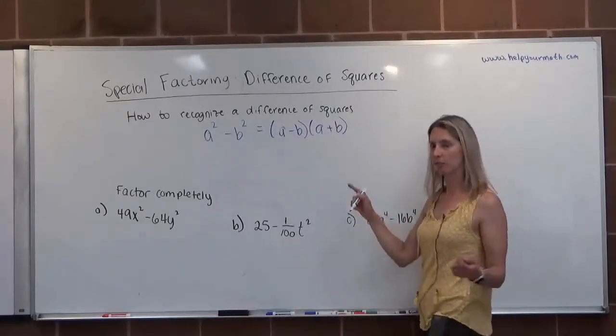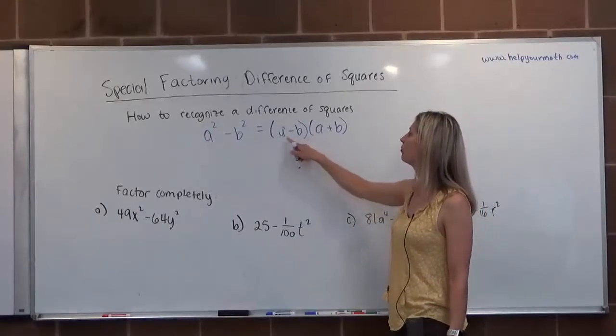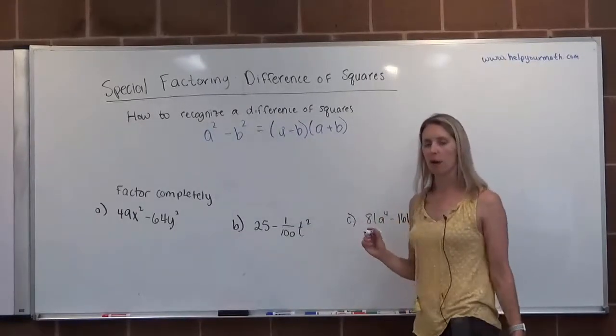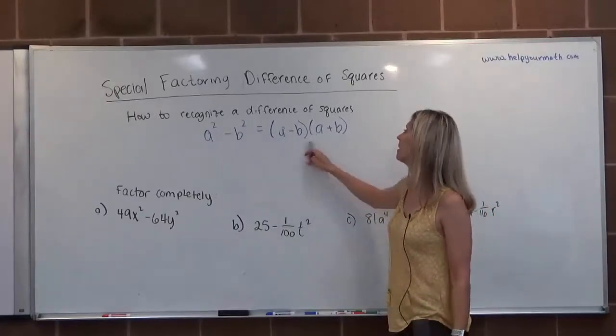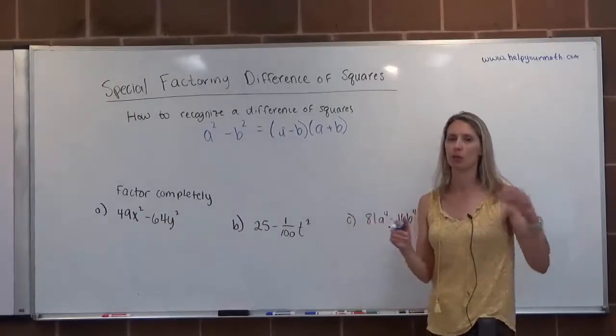And if you check this, if you multiply these back out, what ends up happening when you FOIL or use the distributive property is the middle terms cancel. Because one middle term is AB, but the other one is negative AB, so those will cancel out.